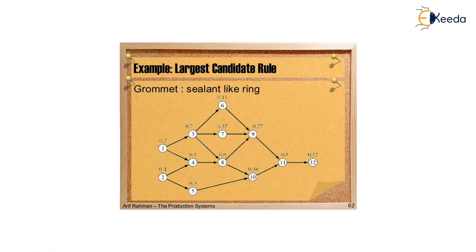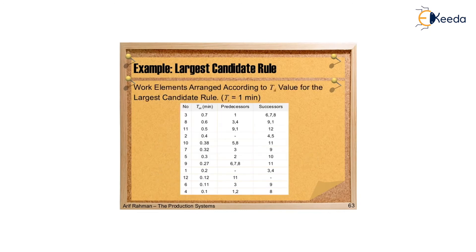Based on the predecessors, we draw the precedence diagram shown below: 1 and 2 go to 3 and 4; 2 also leads to 4 and 5; from 3, elements 6, 7, and 8 are determined; 4 gives rise to 8; 5 gives rise to 10; 7 gives rise to 9; 8 gives rise to 9; and 6 goes to 9. All together they lead to 11, which then goes to 12 — the last element at 0.12. Using Tc equal to 1 minute, we now apply the Largest Candidate Rule.